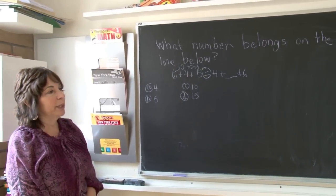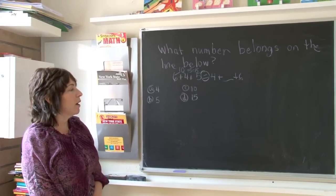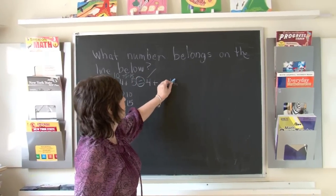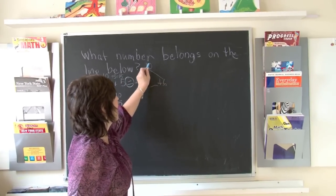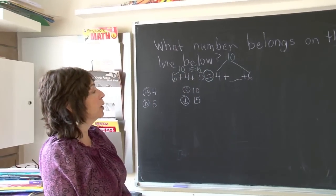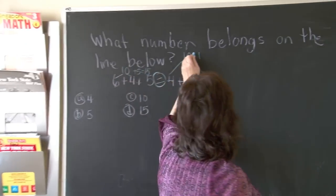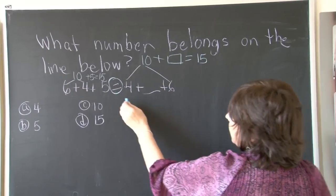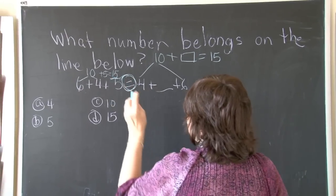So if we look here, we have 6, 4, and 6, and that is 10. So 10 plus what number is going to give me 15? Because it's equal, the same.